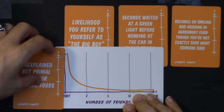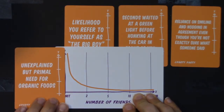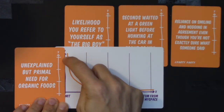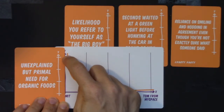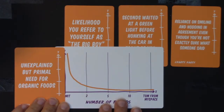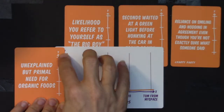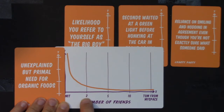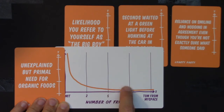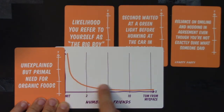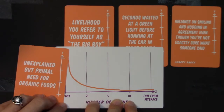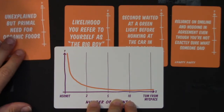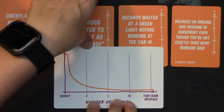So if you are a hermit, this would mean your primal need for organic foods is really high — but I don't think hermits have a high need for organic foods. And if you have two friends, your need for organic foods is much lower; five friends even lower. This is saying the more friends you have, the less need you have for organic food — that doesn't really hold water for me. I'm going to push this into the 'I don't think so' pile.